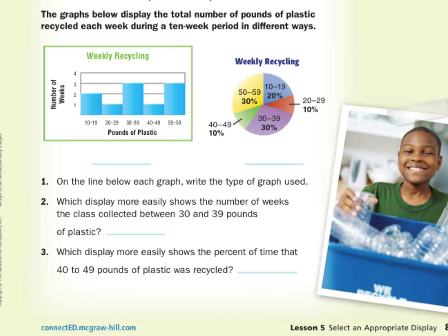So the graphs below display the total number of pounds of plastic recycled each week during a 10-week period in different ways. On the line below each graph, write the type of graph used. Well, in the first one, our bars are together. As you notice, there are no spaces between our bars and we have intervals down here 10 to 19, 20 to 29, 30 to 39. We have those intervals. And so this is an example of a histogram.